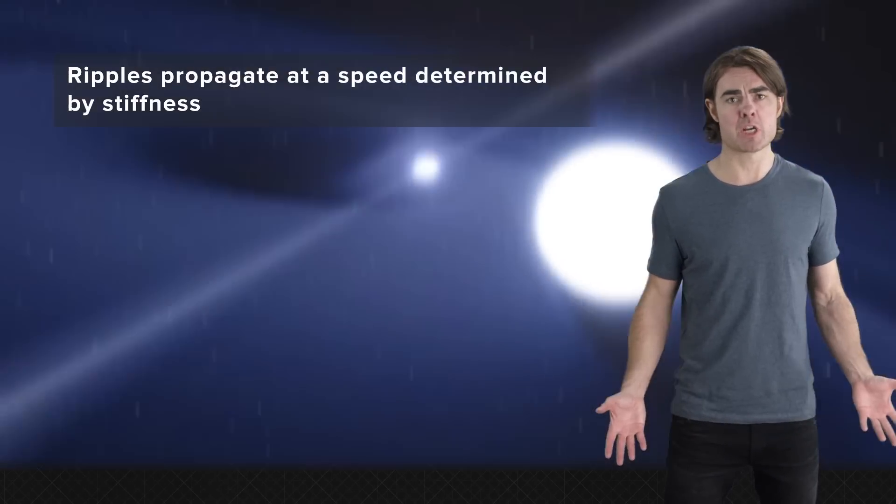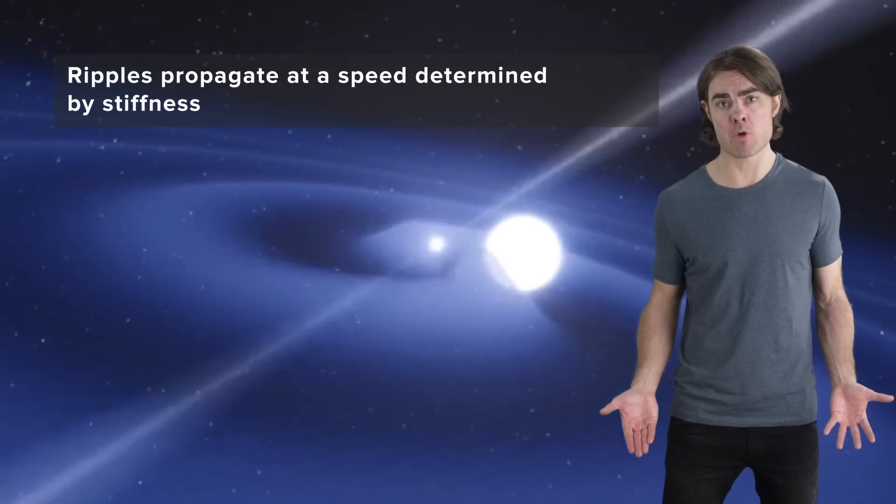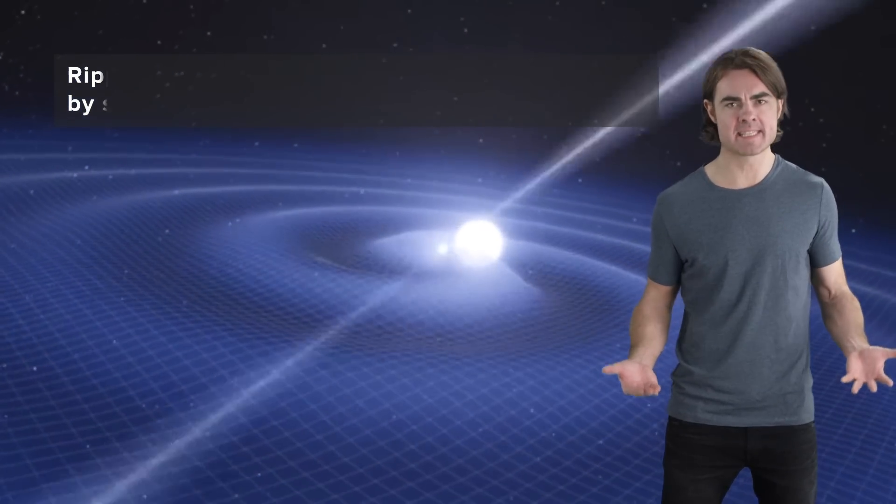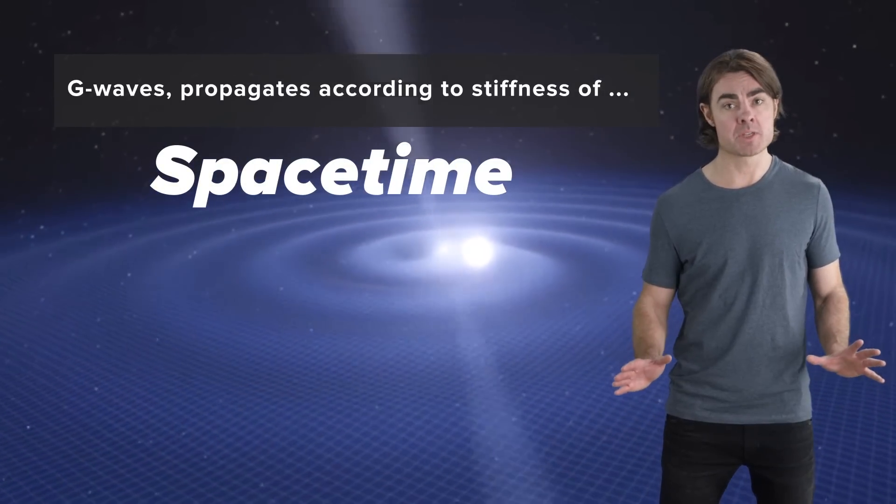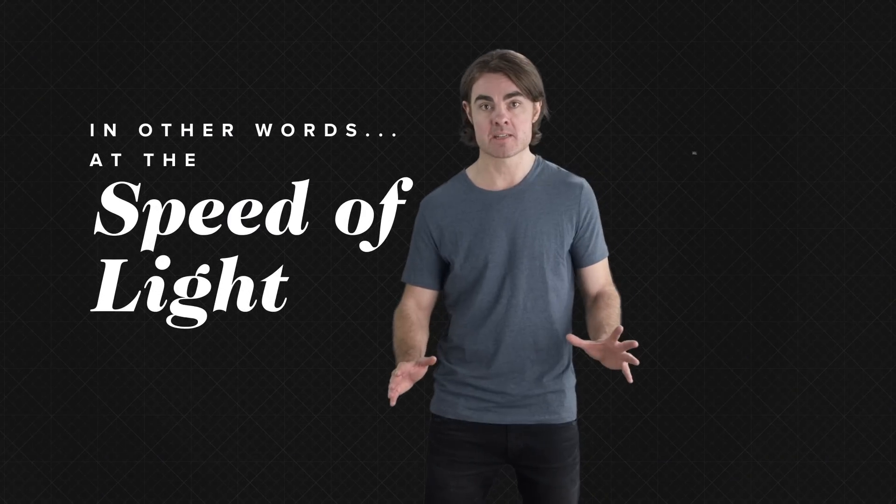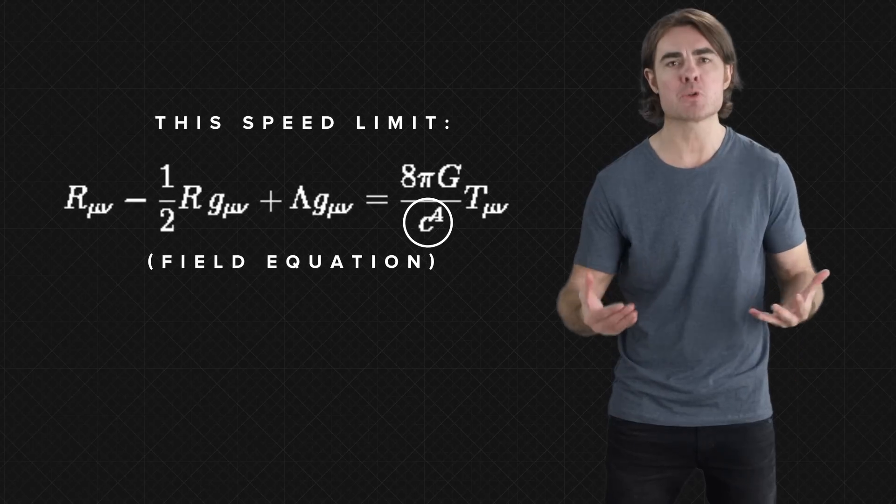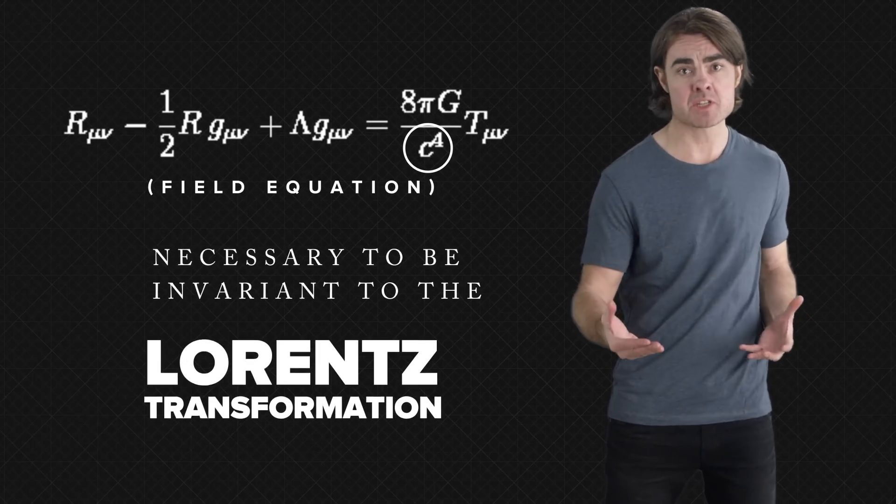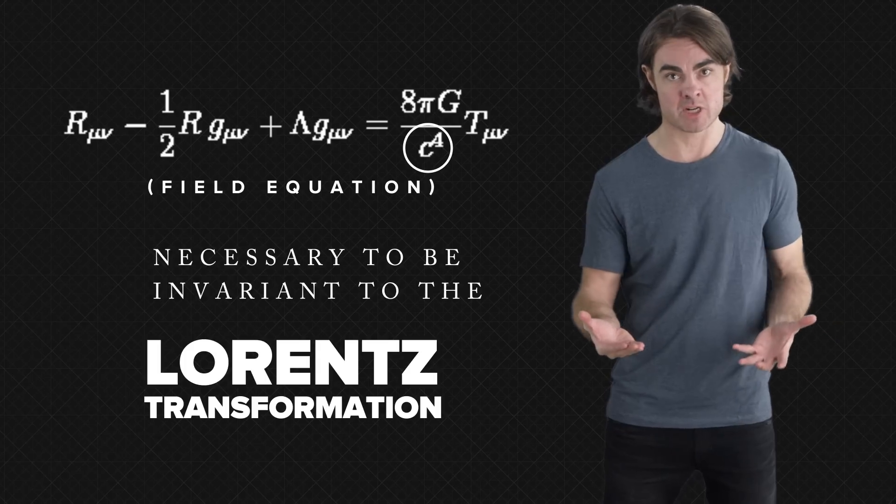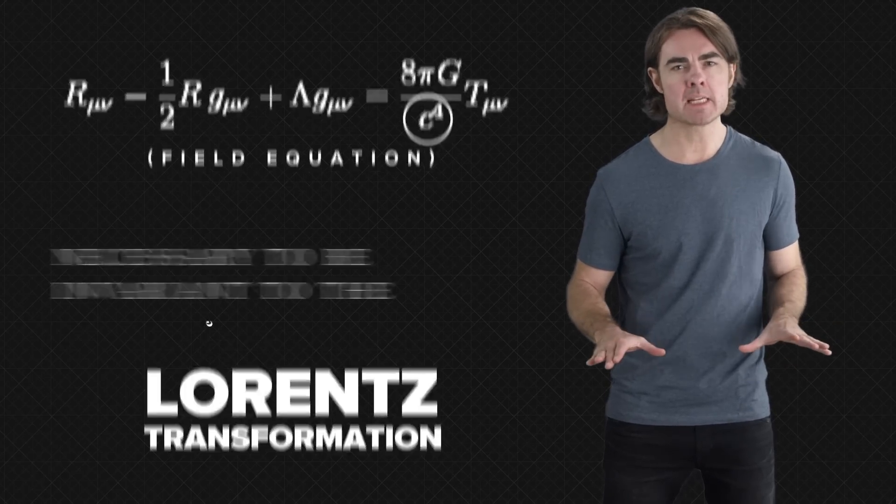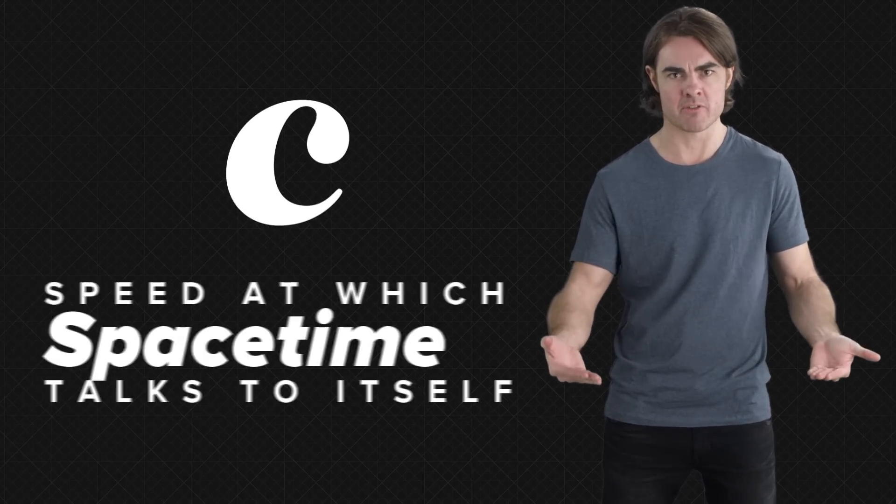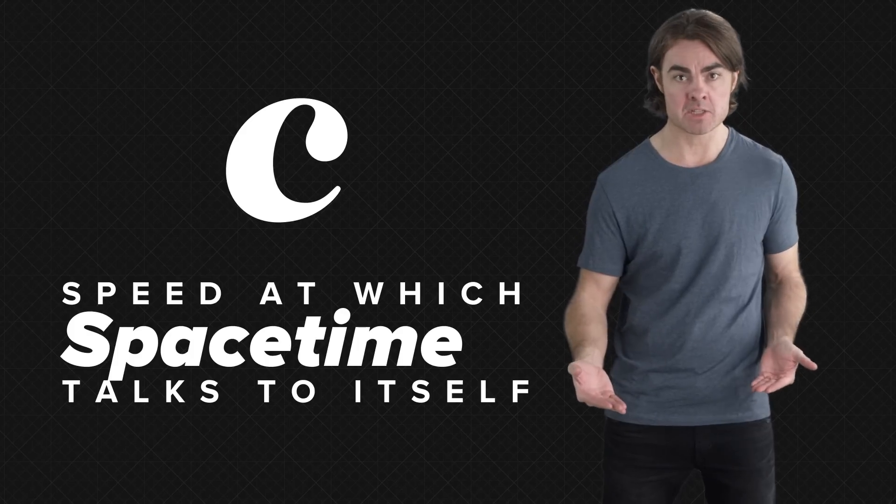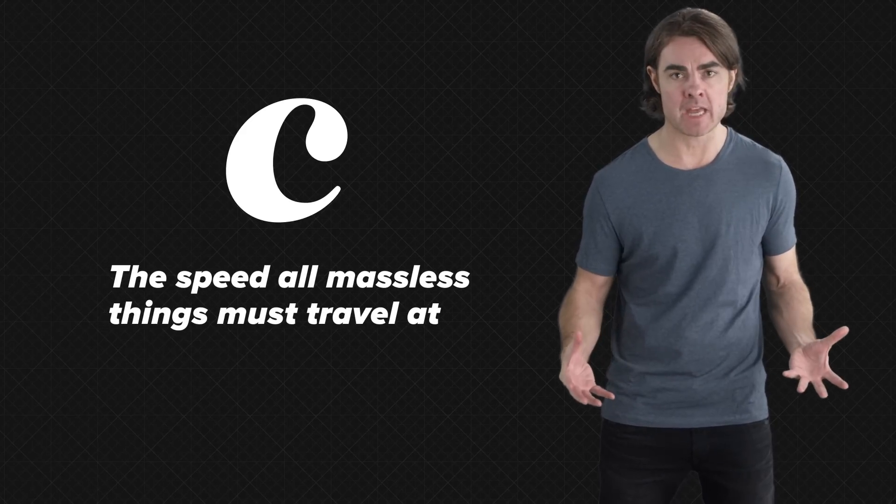Just as the ripples in a rubber sheet propagate at a certain speed determined by the stiffness of the rubber, gravitational waves, and indeed gravity itself, propagates according to the stiffness of spacetime. In other words, at the speed of light. This speed limit comes from the fact that the speed of light is built into Einstein's field equation, which is necessary for it to be invariant to the Lorentz transformation. It's worth pointing out that this speed limit is really the speed of causality, the speed at which spacetime talks to itself. And all massless things, including G waves and light, must travel at that speed.